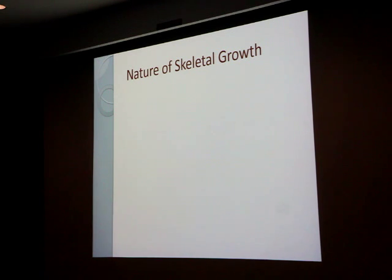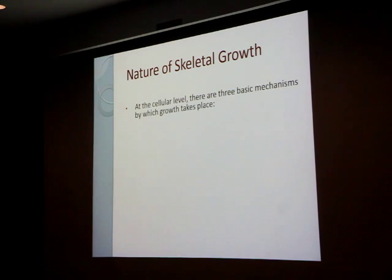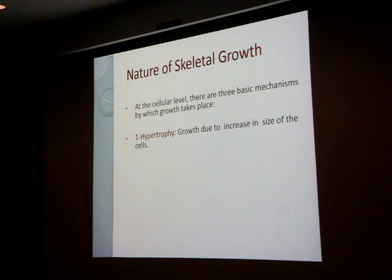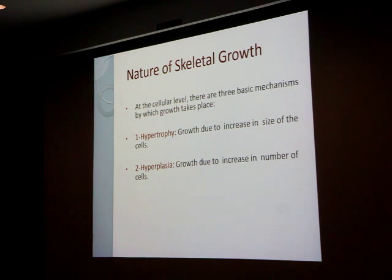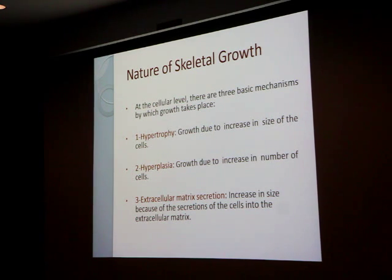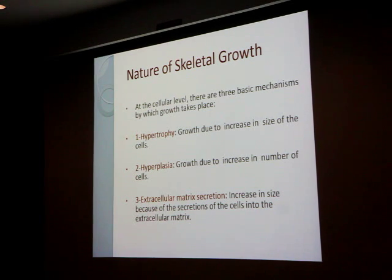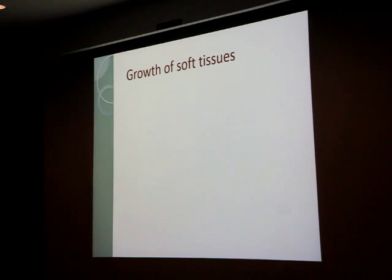So what's the nature of skeletal growth? There are three basic mechanisms by which growth takes place — not only skeletal growth, but for soft tissue and hard tissue as well. At the cellular level: first, hypertrophy, which means increasing size of cells. Second, hyperplasia, which refers to the number of cells. And finally, extracellular matrix secretion. These three mechanisms occur whether it's hard tissue, soft tissue — the difference is which one is taking more place in that tissue or organ.